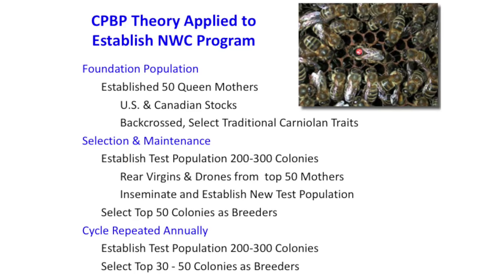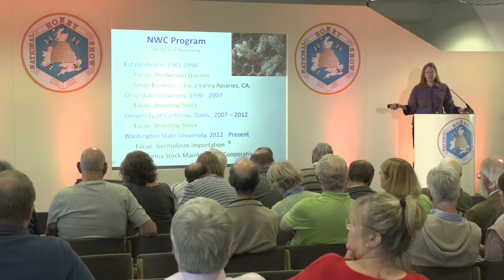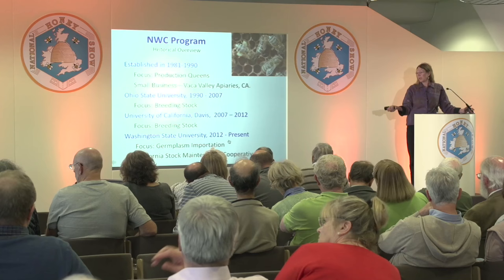I established this in the early 80s, and our focus was mostly queen production for the industry. We raised about 5,000 queens a year, which is really small for U.S. commercial production — most queen producers are doing 20 up to 500,000 queens per operation. This was moved into Ohio State University, then through a couple of different universities, and then to University of California Davis, and now currently Washington State University. When I went into the university system, I focused more on supplying breeding stock to commercial producers rather than doing production stock.